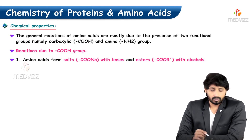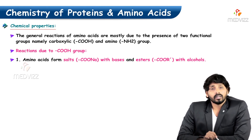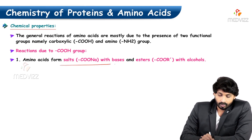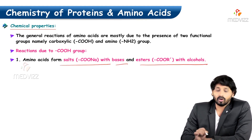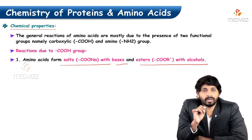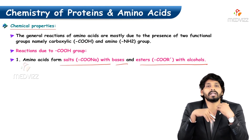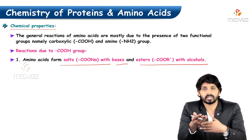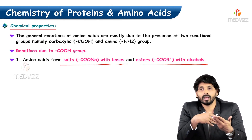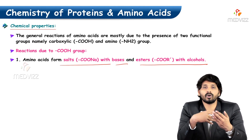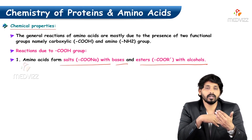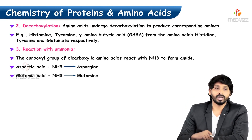First, we'll discuss chemical reactions because of the carboxylic group. Amino acids form salts with bases and esters with alcohols. This carboxylic group of amino acids forms salts when you treat the amino acid with sodium hydroxide — forming COONa — and with alcohols it forms an ester linkage, especially seen in fatty acids and lipids.